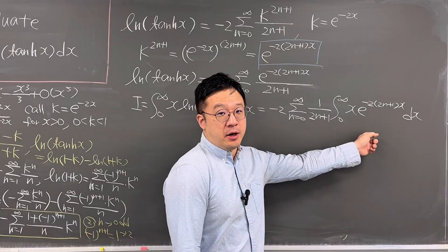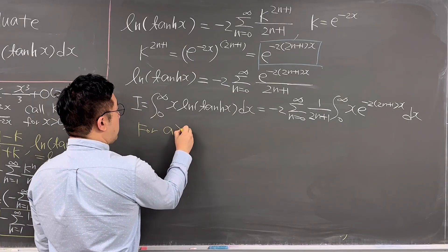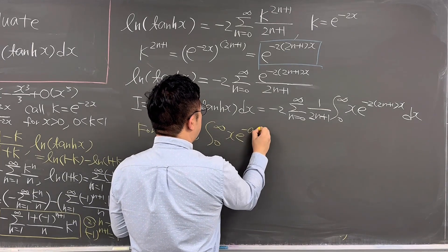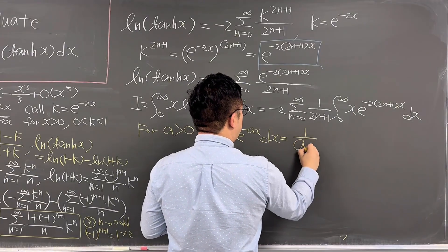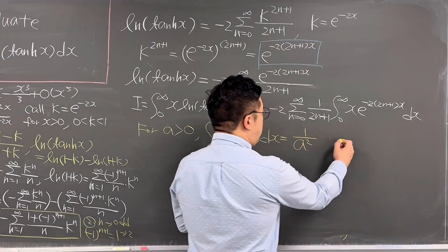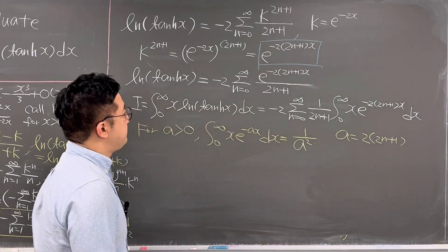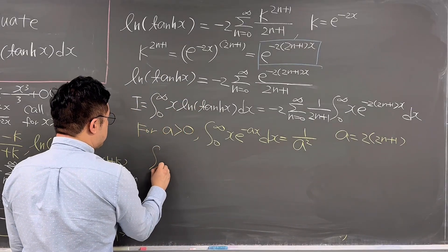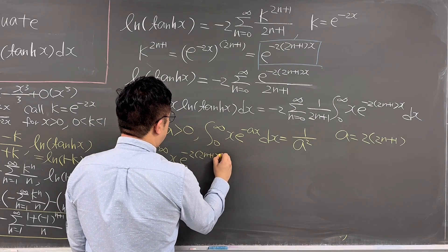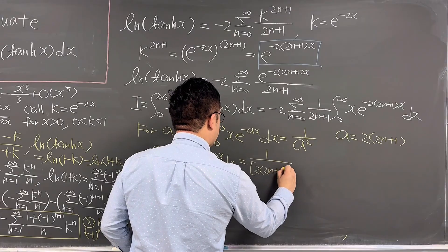This integral is looking familiar. For a greater than 0, we have the nice result that the integral from 0 to infinity of x times e to the power of negative ax dx equals 1 over a squared. In our case, a equals 2 times 2n plus 1. So the integral from 0 to infinity of x times e to the power of negative 2 times 2n plus 1 times x dx equals 1 over 2 times 2n plus 1 squared, which equals 1 over 4 times 2n plus 1 squared.